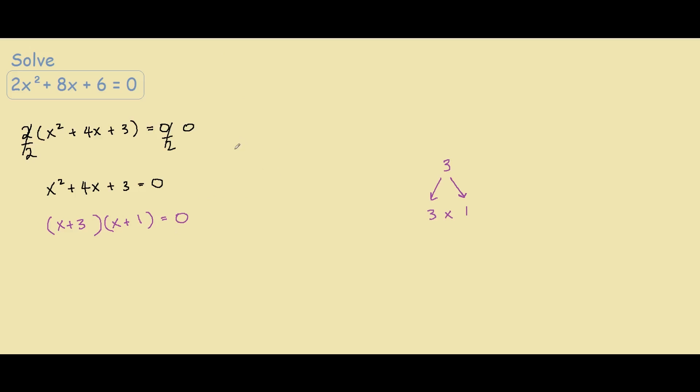So if we were to solve this equation, we know that anything times 0 equals 0. So what do we want? We want this bracket to equal 0. So we have x equals negative 3 because if this was negative 3 plus 3, it would be 0. So 0 times anything equals 0.